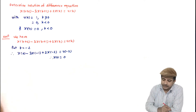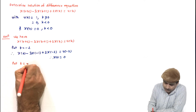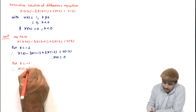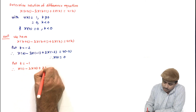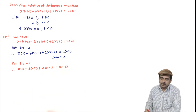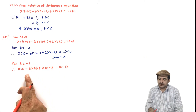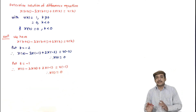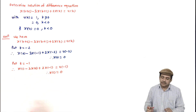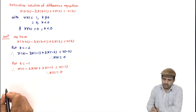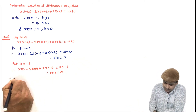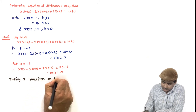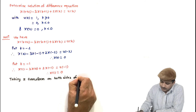Now we need x(1). Put k = −1: x(1) − 3x(0) + 2x(−1) = u(−1). Since x(0) = 0, x(−1) = 0, and u(−1) = 0, we get x(1) = 0 as well. So both initial conditions are zero. Though they are zero, we have obtained them. Now we have the initial conditions and we will proceed with the general step of taking Z transform on both sides.